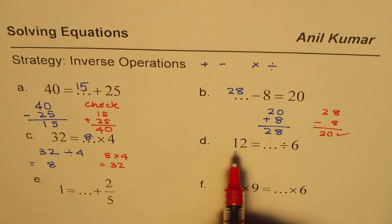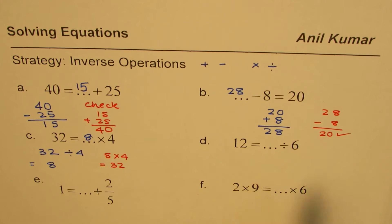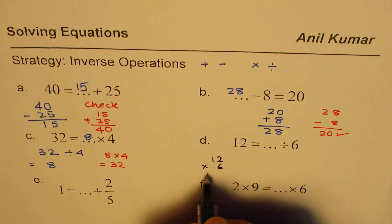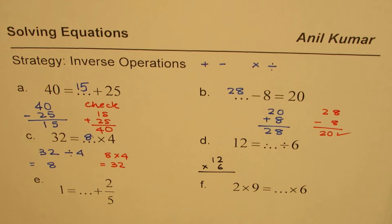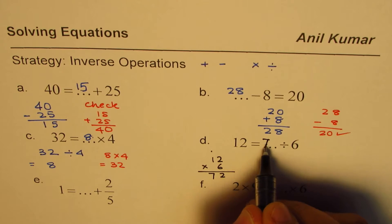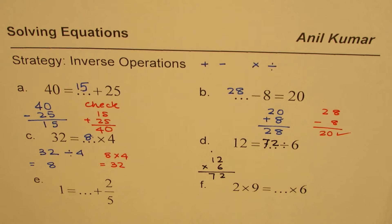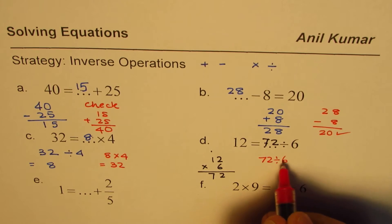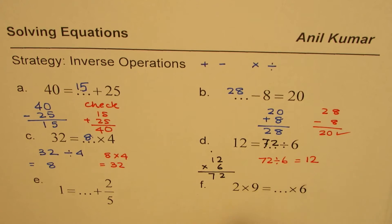So now here, when I write 12 equals to something divided by 6, what should I do? I should multiply by 6. So I should do 12 times 6 to get my answer which should fit in here. Here, 6 times 2 is 12, 1 and 6 times 1, 6 plus 1 is 7. So it should be 72. As an exercise, you should check what is 72 divided by 6. It is indeed 12.